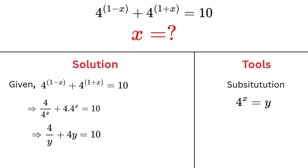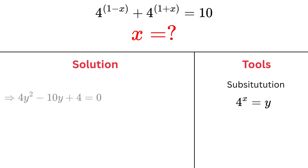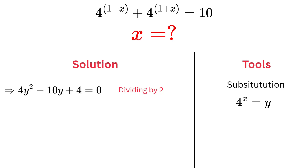Step 3: Eliminate the denominator. To get rid of the fraction, multiply the whole equation by y. You'll get 4 plus 4y squared equals 10y. Now bring all terms to one side to form a quadratic: 4y squared minus 10y plus 4 equals 0. Let's simplify by dividing the whole equation by 2: 2y squared minus 5y plus 2 equals 0.